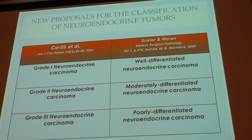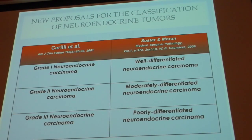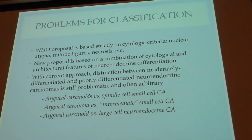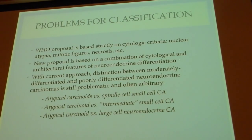At least two proposals have appeared in the literature. Cirilli et al., the group of Dr. Mark Wick at the University of Virginia, proposed grading them as neuroendocrine carcinoma grade 1, 2, and 3. We presented with Dr. Moran a proposal to categorize them by degree of differentiation: well-differentiated, moderately differentiated, and poorly differentiated neuroendocrine carcinoma. The new proposal combines cytological and architectural features rather than relying strictly on cytologic criteria alone.